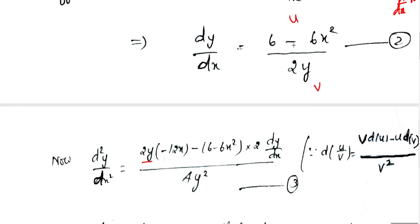The differential of 6 is 0, and the differential of 6x² with respect to x is 12x, so the term becomes -12x. Then we subtract u times the differential of v: (6 - 6x²) times the differential of 2y with respect to x, which gives 2·(dy/dx).